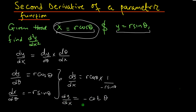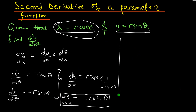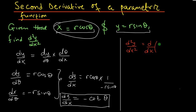So that's our first derivative: dy over dx equals negative cotangent of theta. To find the second derivative, we have to take the derivative of the first derivative. The second derivative of y with respect to x is the derivative with respect to x of the first derivative.